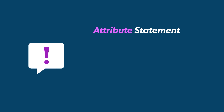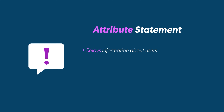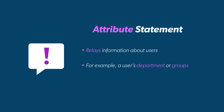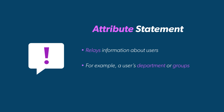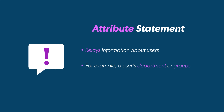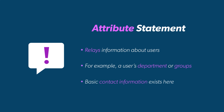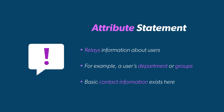The second is the Attribute Statement. SAML has the capacity to relay information about users, such as what department they work in or whether they're part of a VIP group that may access a restricted system. This is also where basic contact information exists.